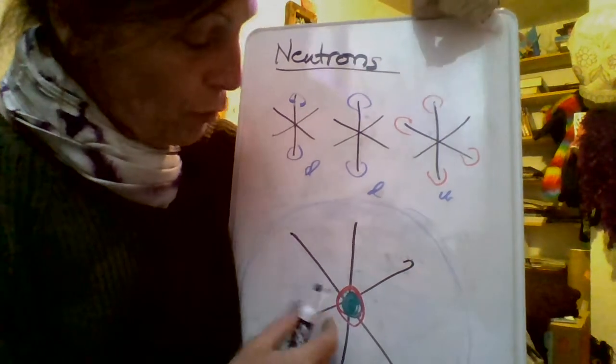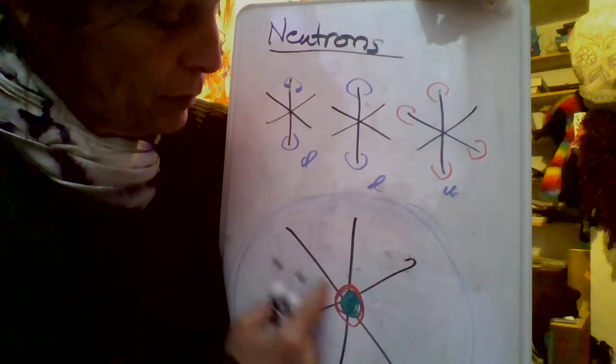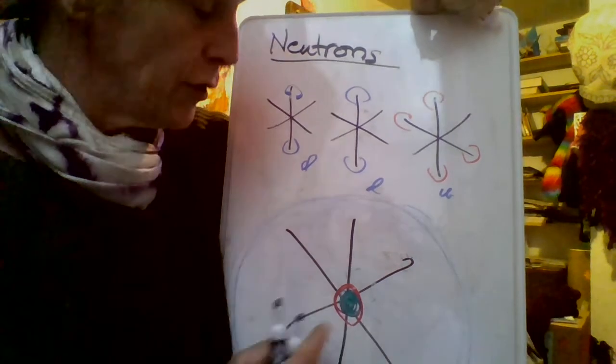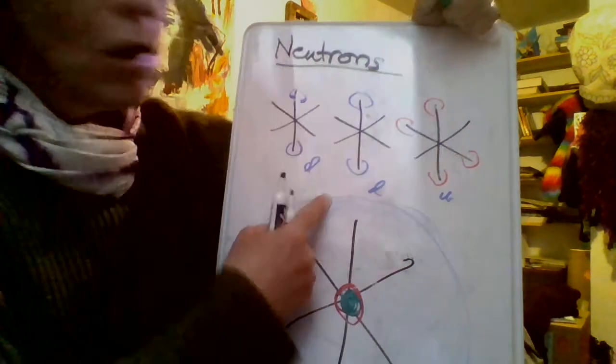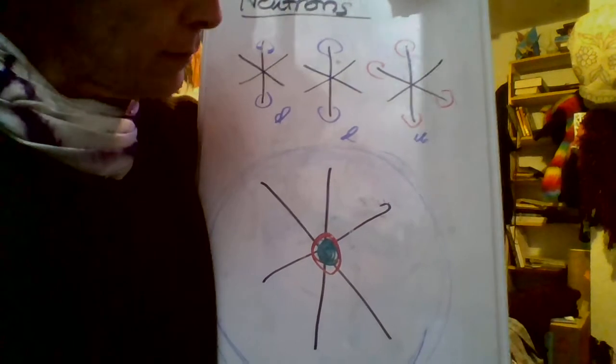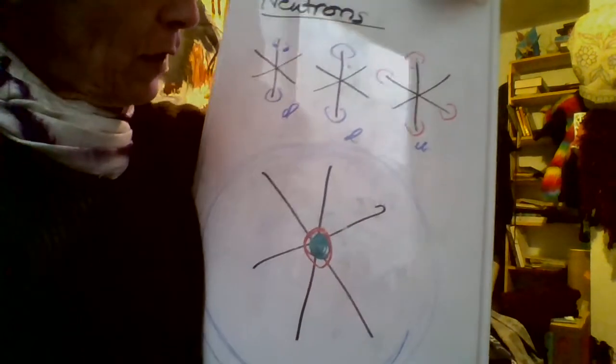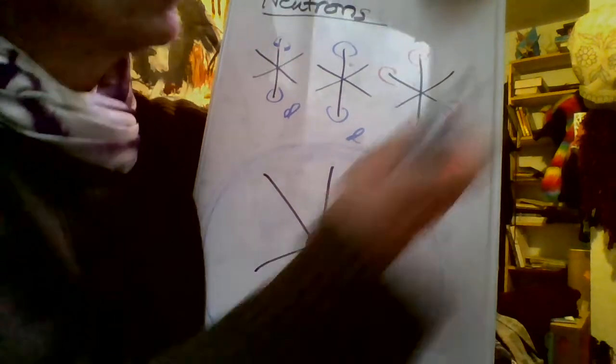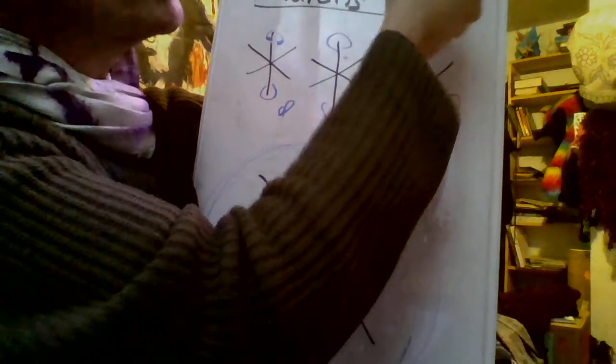There's the proton. This is the density, this is pulling space towards it, converging space. Because space is converged, we have a positive charge. Because we have a positive charge, we have a negative charge. Protons do not exist by themselves. They're not autonomous things, they're part of a composite, part of a process.